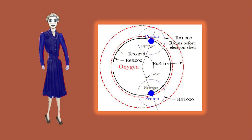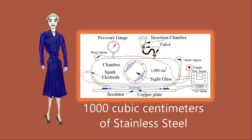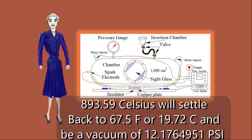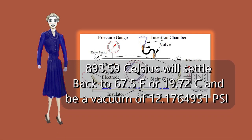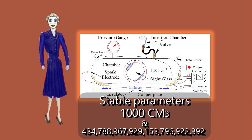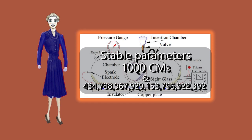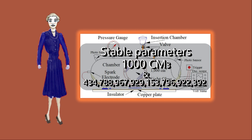It seems that a stable frame of reference is reasonable to consider, in that the event is short duration and the chamber, other than physical shock, did not change its volume substantially for the duration of 20 milliseconds at 893.59 degrees Celsius. The temperature will again settle back to 67.5 degrees Fahrenheit and be a vacuum of 12.1764951 PSI compared to ambient pressure of 14.7 PSI. Thus we have two stable parameters: the chamber at 1,000 cubic centimeters and 434.788967 septillion molecules. We can adjust the radius and shape to accommodate space as indicated on page 136.